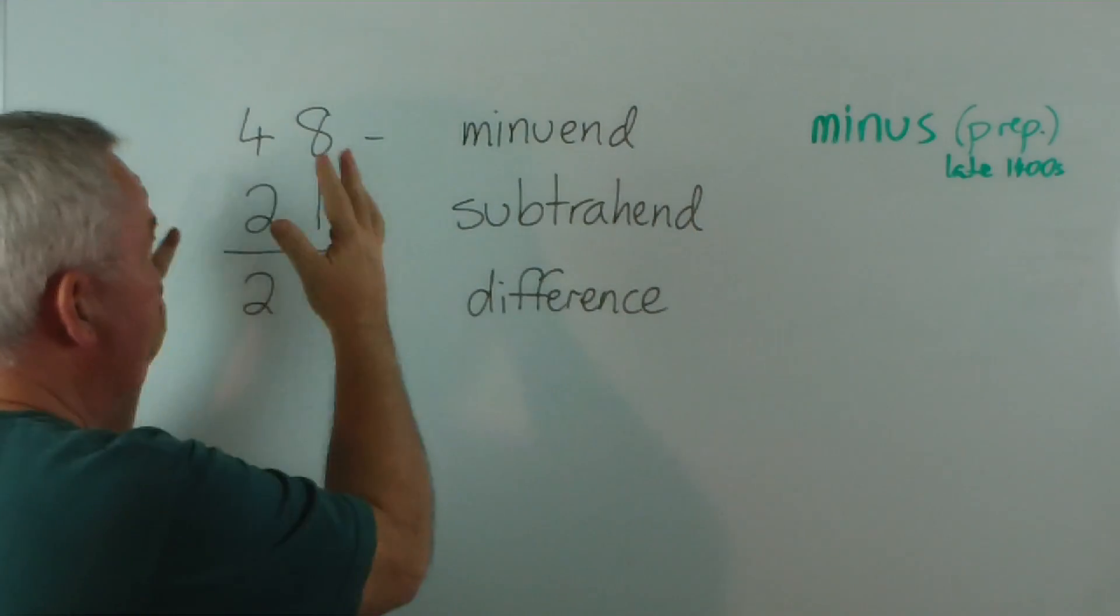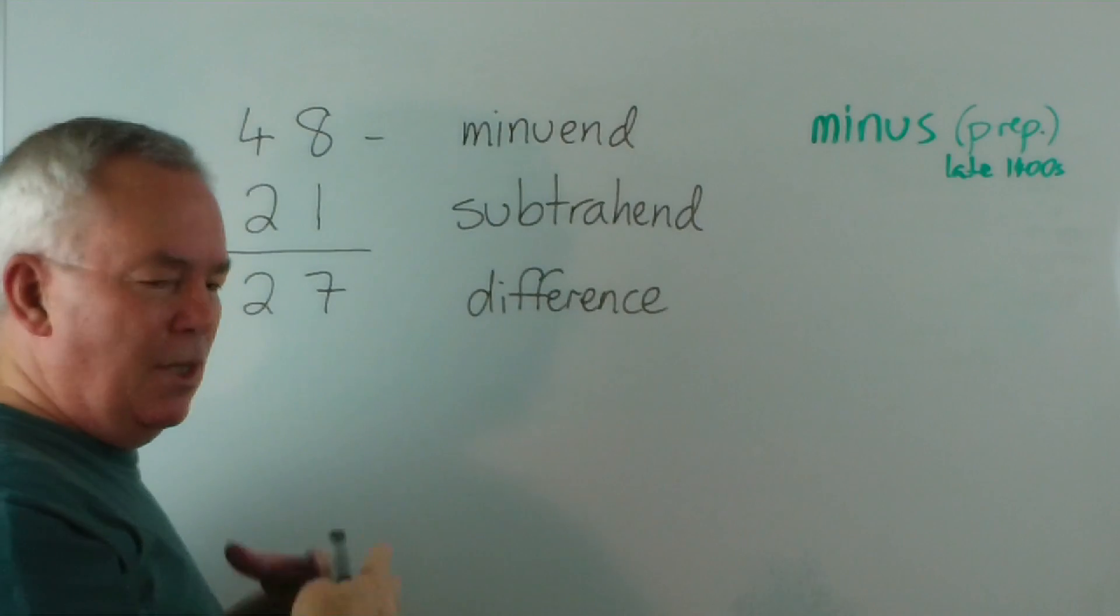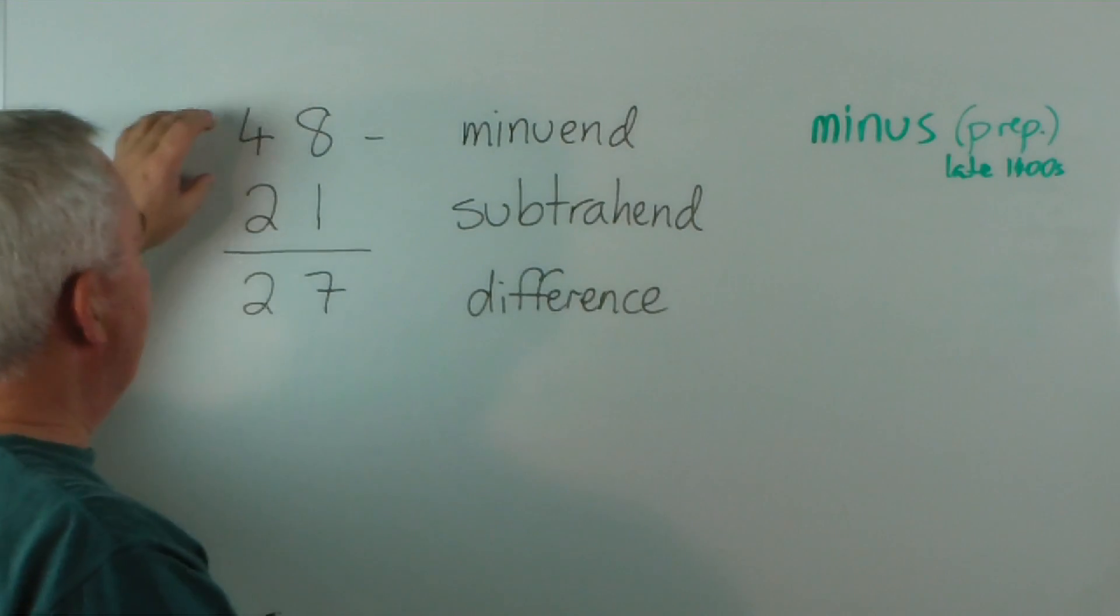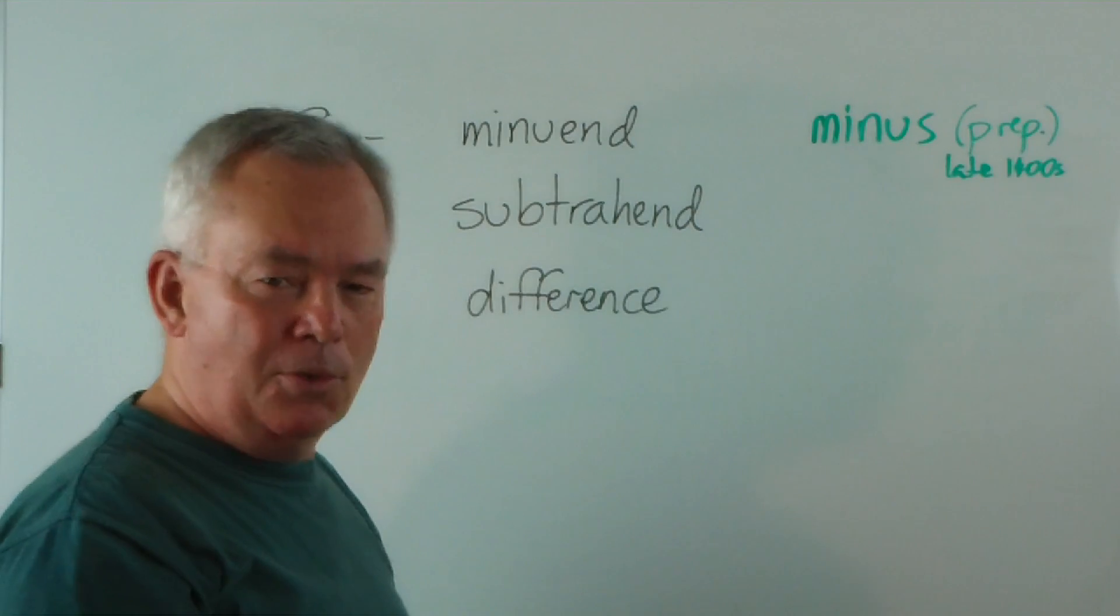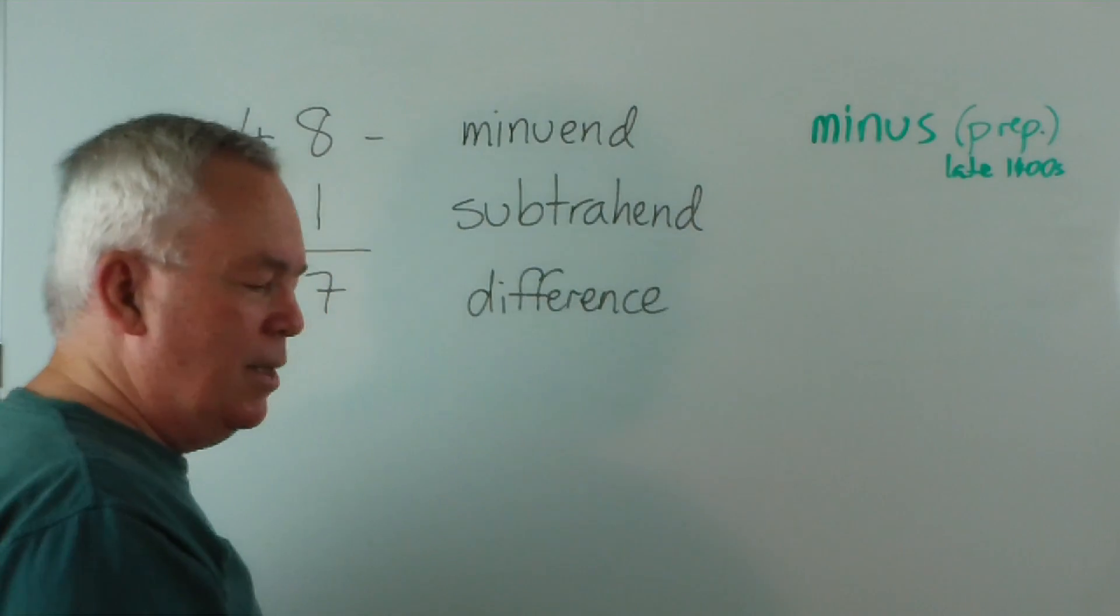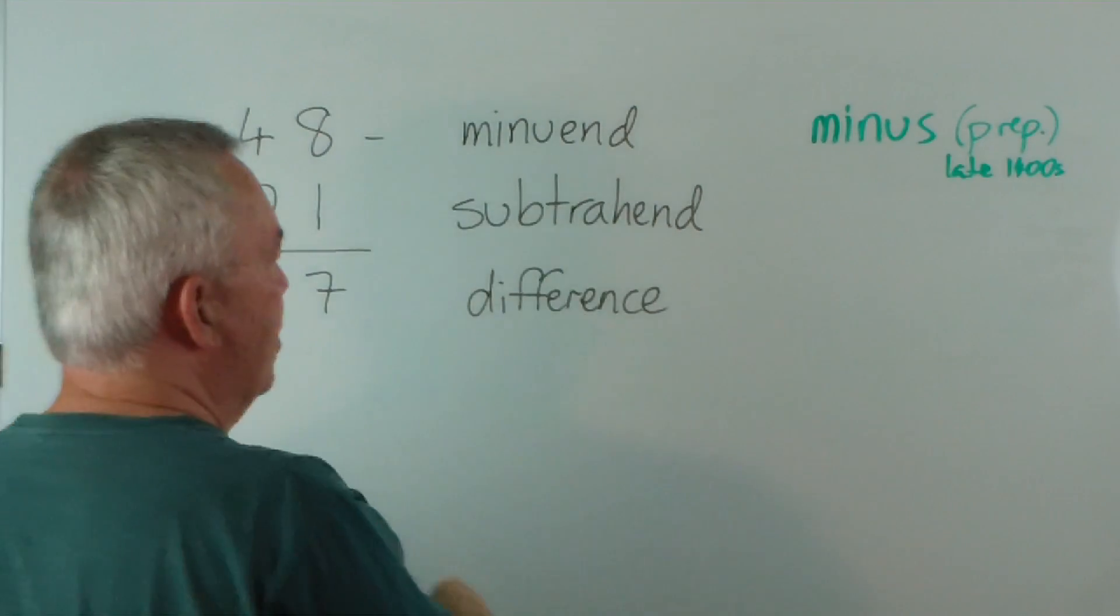We do not minus the numbers. That word is to come. That describes the action, the verb. So we never say we minus 21 from 48. That's not... I know a lot of people say that today. But originally, 48 minus 21.